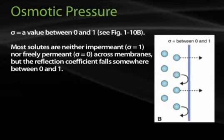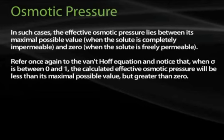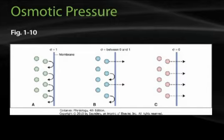The case when sigma is a value between 0 and 1 is shown in figure 1-10b, also on page 14. Most solutes are neither impermeant (sigma equals 1) nor freely permeant (sigma equals 0) across membranes, but the reflection coefficient falls somewhere between 0 and 1. In such cases, the effective osmotic pressure lies between its maximal possible value, when the solute is completely impermeable, and 0, when the solute is freely permeable. When sigma is between 0 and 1, the effective osmotic pressure will be less than its maximal possible value but greater than 0.